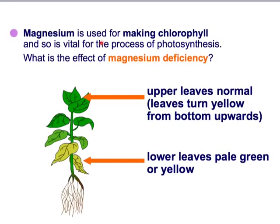Magnesium makes chlorophyll, so without chlorophyll there's no green in the plants. The upper leaves may appear normal; however, the underside of the leaf may go yellow. The lower leaves can also go to a pale green or yellow colour, and that's purely because of a lack of chlorophyll in the leaf.